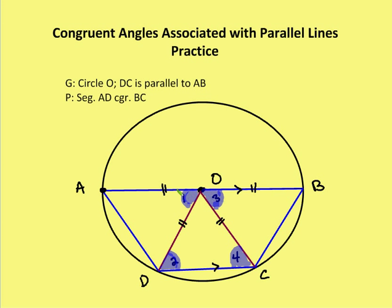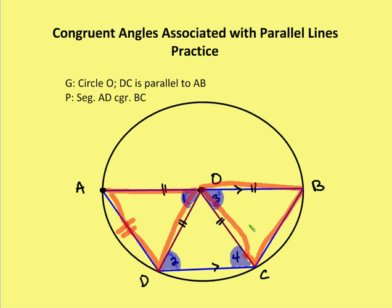If angles one and three are congruent, and AO, OB, DO, and CO are all congruent, I have two triangles — AOD and BOC — that are congruent by Side-Angle-Side. If I have two triangles congruent by SAS, I know that segment AD is congruent to BC.